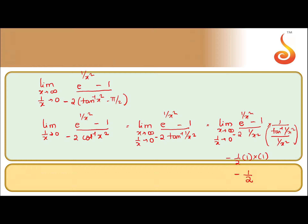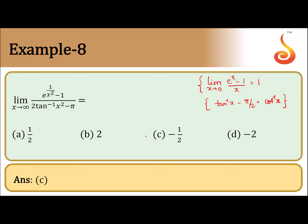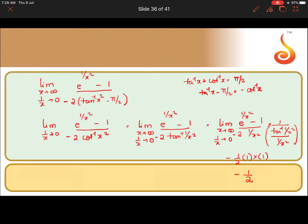So finally we get minus 1/2. I repeat once again: tan inverse x plus cot inverse x equals pi by 2, so tan inverse x minus pi by 2 equals minus cot inverse x. Therefore the minus sign will come, and option C is correct.